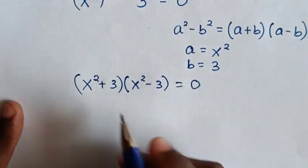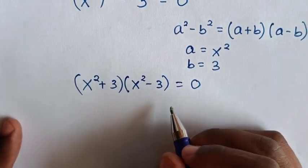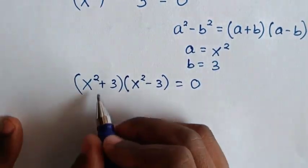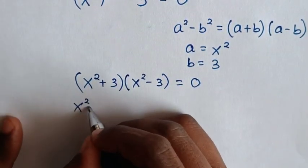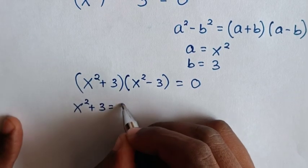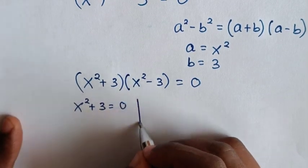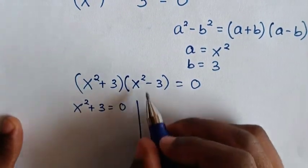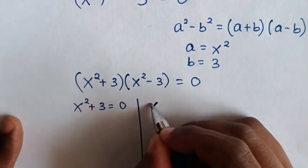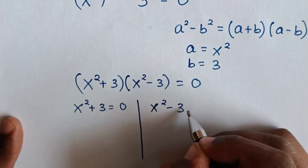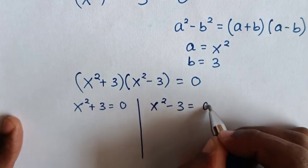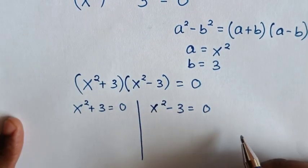To solve from here we have two cases: the first case is x square plus 3 is equal to 0, and the second case is x square minus 3 is equal to 0.